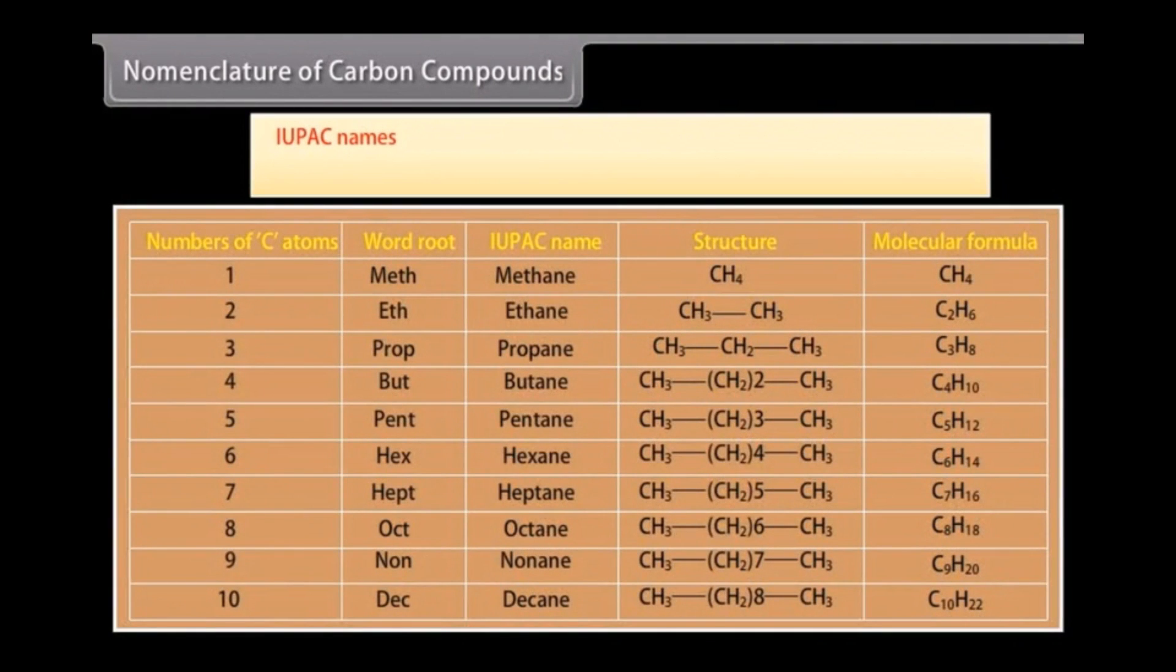IUPAC names. Carbon compounds now need to be named in a more systematic way. A committee called the International Union for Pure and Applied Chemistry, IUPAC, put forward a system of giving scientific names to carbon-based compounds. These names are followed all over the world and are called IUPAC names.